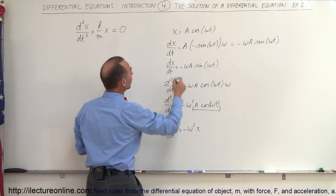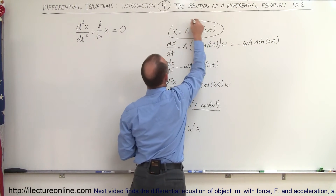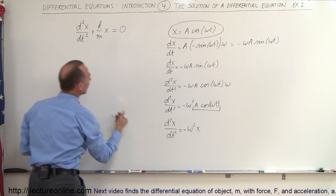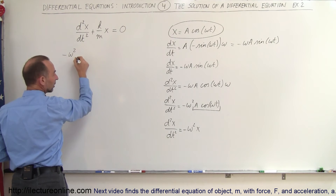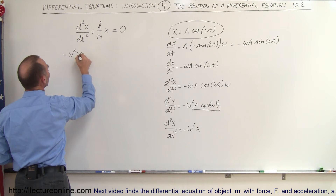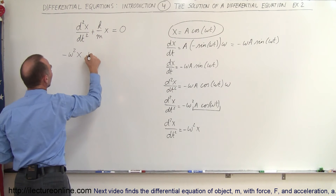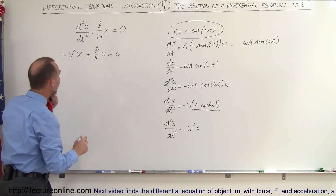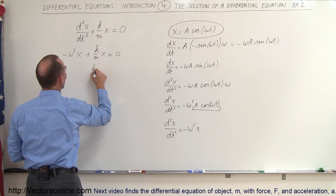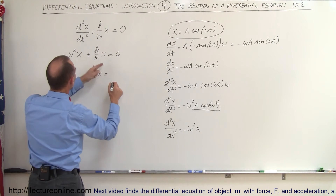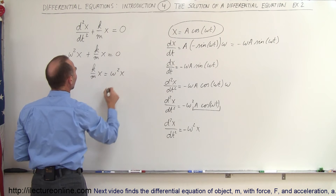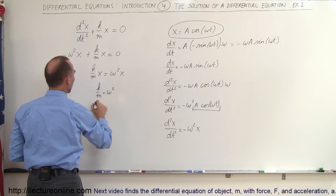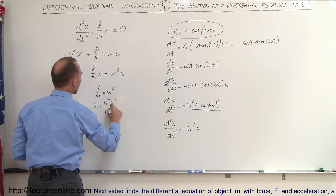So if we let x equal A times the cosine of omega t and plug that into the equation, we know the second derivative equals minus omega squared times x. So we can say minus omega squared times x plus k/m times x equals zero, which means k/m times x equals omega squared times x, and therefore k/m must equal omega squared, or omega is equal to the square root of k over m.